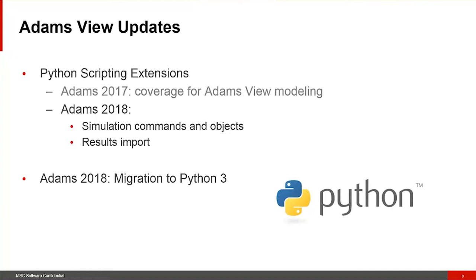With ADAMS 2018, we have migrated from Python 2.7.x to Python 3. The ADAMS Python interface debuted in 2017 was already Python 3 compliant from the start. However, Python scripts that you may be writing around the ADAMS Python interface classes and methods may not necessarily be Python 3 compliant, but they need to be starting with ADAMS 2018. There are hyperlinks in the documentation describing tips and tricks learned along the way to help you with that transition.